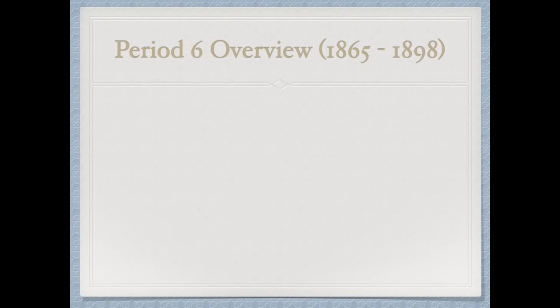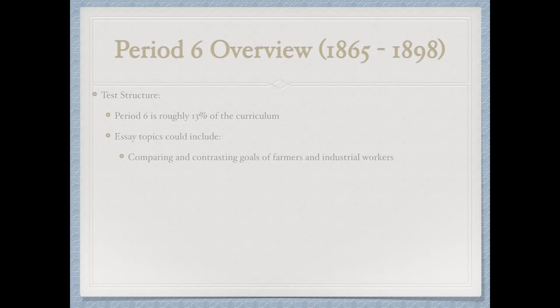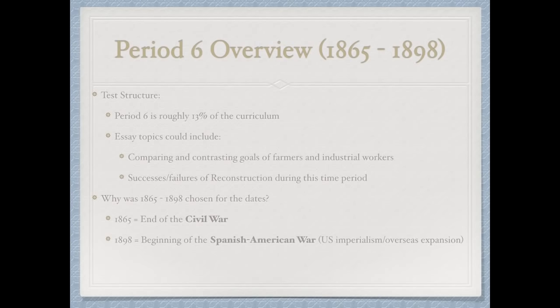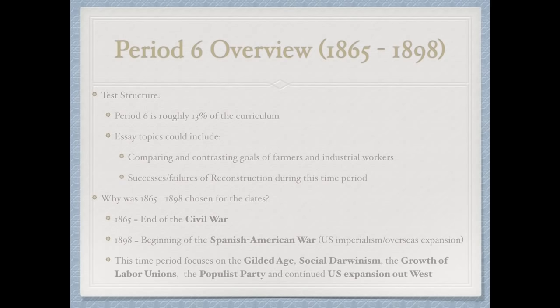Let's get started with Period 6 from 1865 to 1898. This is 13% of the curriculum. Essay topics could include comparing and contrasting goals of farmers and industrial workers and successes and failures of Reconstruction. 1865 marks the end of the Civil War, and 1898 marks the beginning of the Spanish-American War when the US begins to imperialize overseas. Key topics: the Gilded Age, Social Darwinism, the growth of labor unions, the Populist Party, and continued US expansion out west.